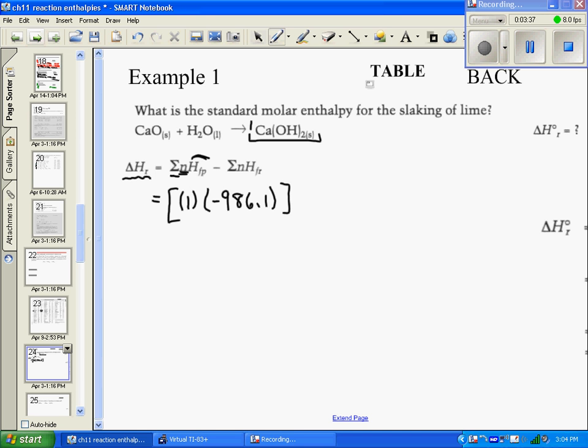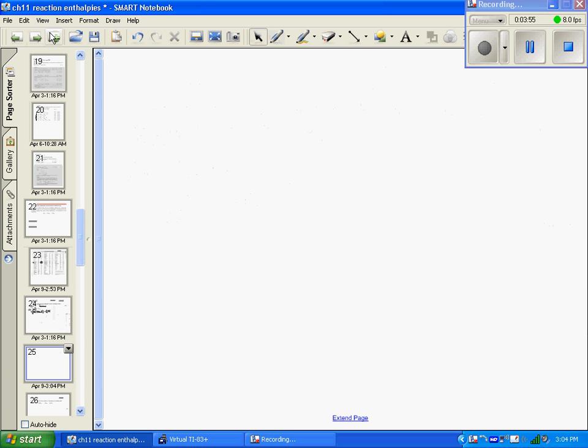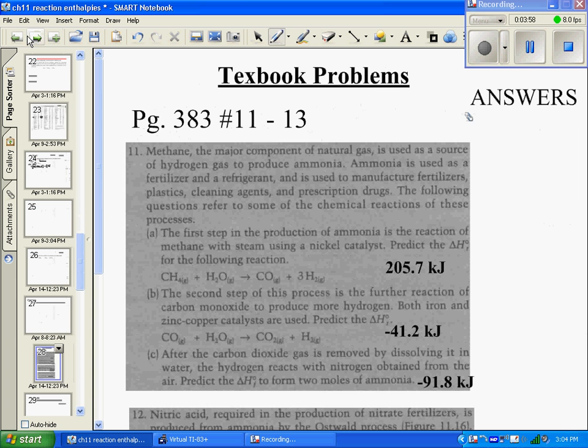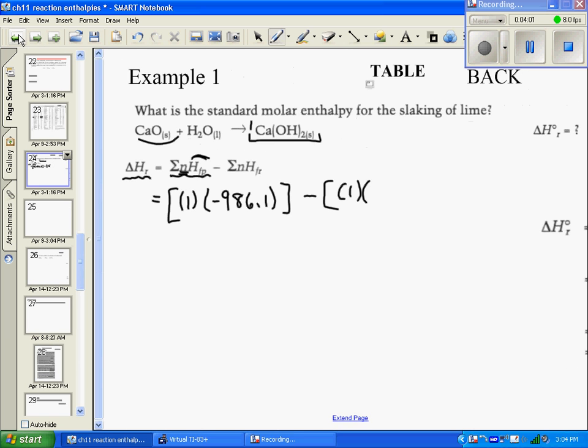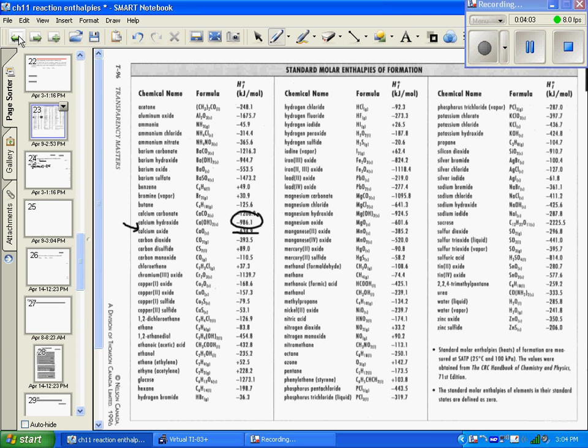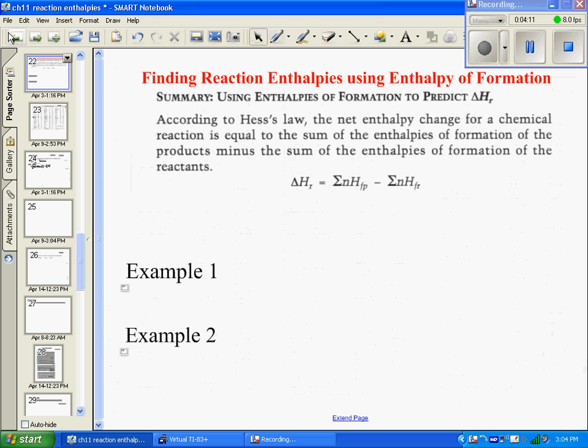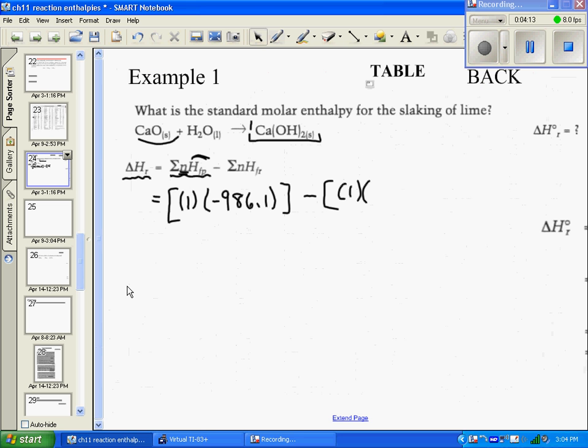That's all the energy of the products. Then we subtract all the energy of the reactants, and we've got two reactants. We have one mole of calcium oxide. We already underlined it a second ago. Calcium oxide is negative 634.9.